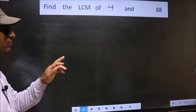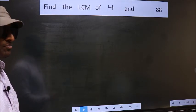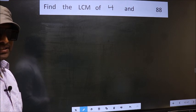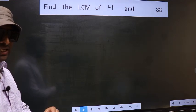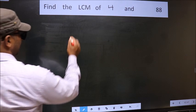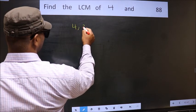Find the LCM of 4 and 88. To find the LCM, first we should frame it in this way. That is 4, 88.